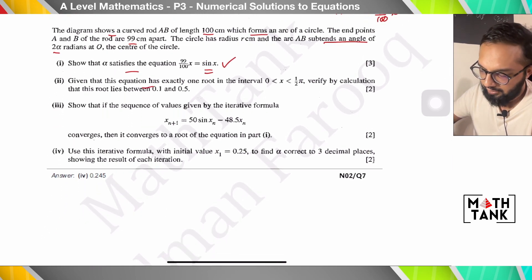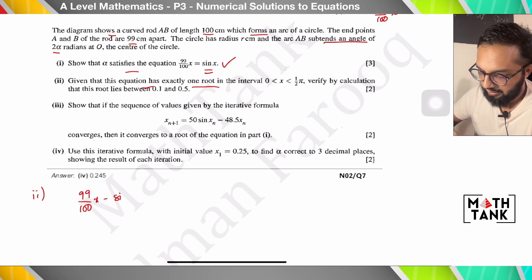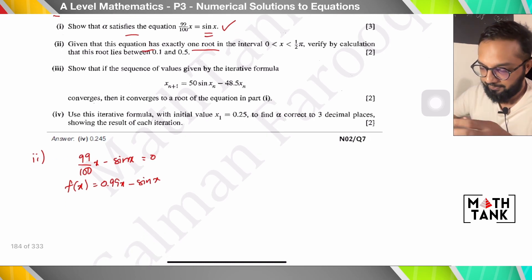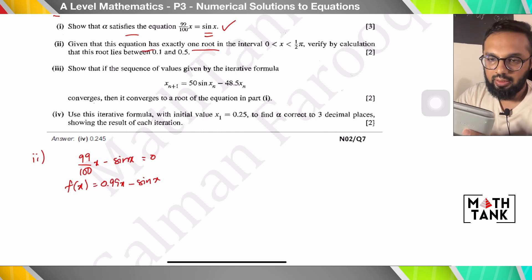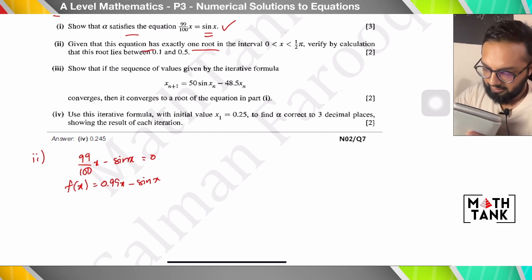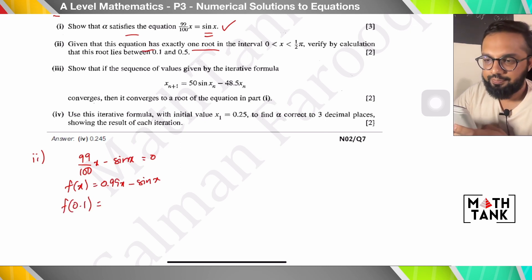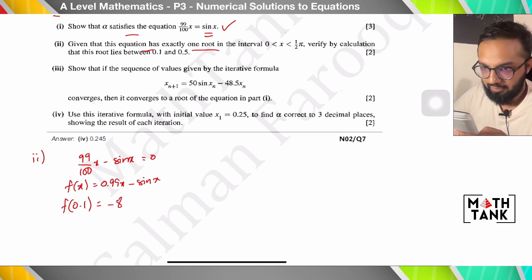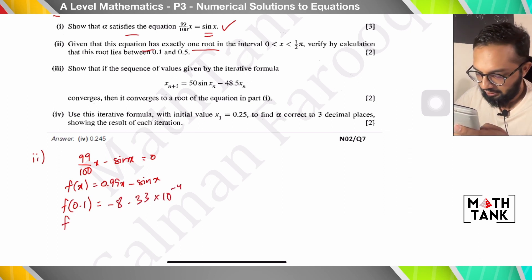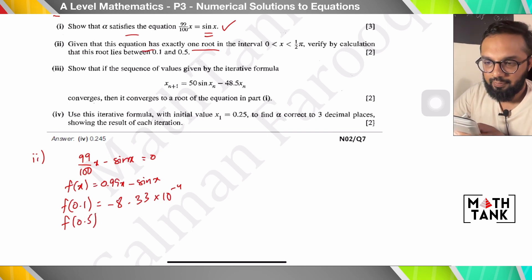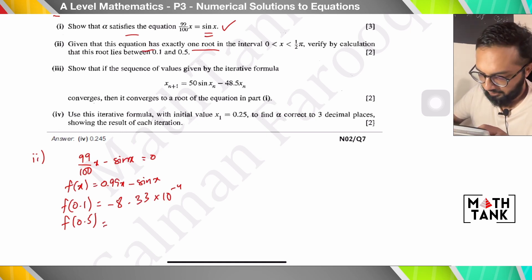Given that the root equation has exactly one root in the interval, I bring everything to one side to create a function: f(x) = 0.99x − sin x. Testing f(0.1): 0.99 × 0.1 − sin(0.1) gives a very small negative value, approximately −8.33 × 10⁻⁴. Then f(0.5) gives approximately 0.01557. The change of sign indicates a root in the interval.